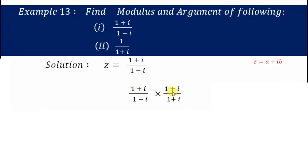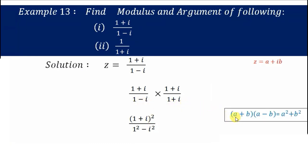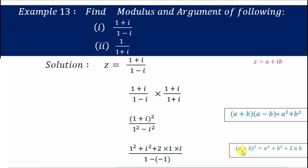So the numerator becomes (1+i) times (1+i), which is (1+i)². The denominator (1-i)(1+i) is solved using the identity (a+b)(a-b) = a² - b², giving a² + b², which equals 1² + 1² = 2.